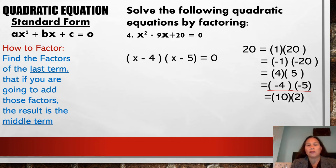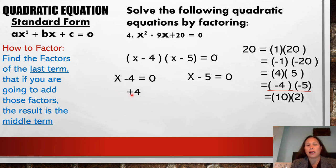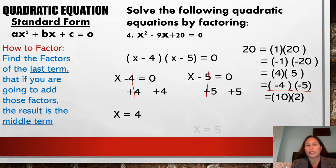So now we write two parentheses: x minus 4 times x minus 5, is equal to 0. Equate each factor to zero: x minus 4 is equal to 0, and x minus 5 is equal to 0. To solve for x, add positive 4 to both sides of the first equation: x is equal to 4. On the other equation, add positive 5 to both sides: x is equal to 5. So we have two solutions: x equals 4 and x equals positive 5. That's how we solve by factoring.